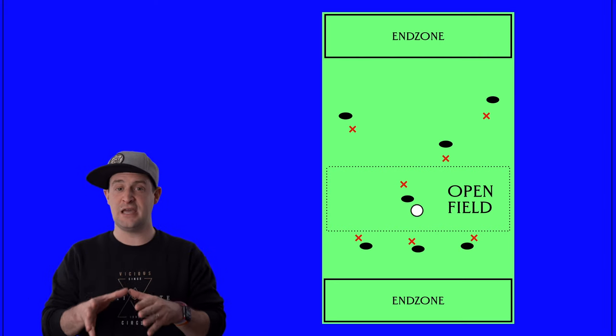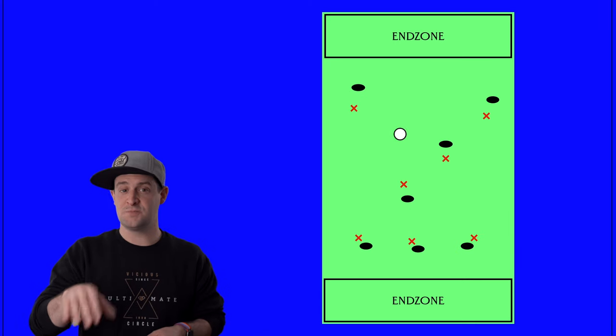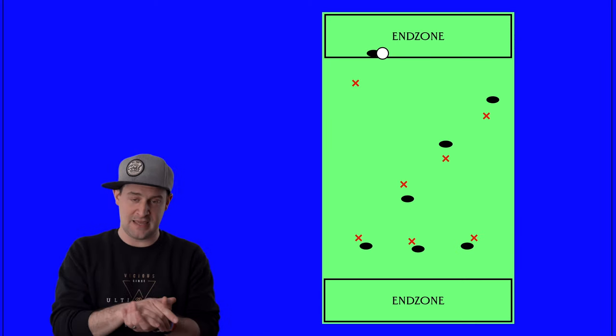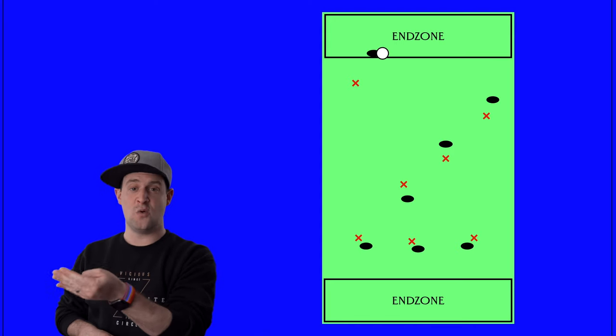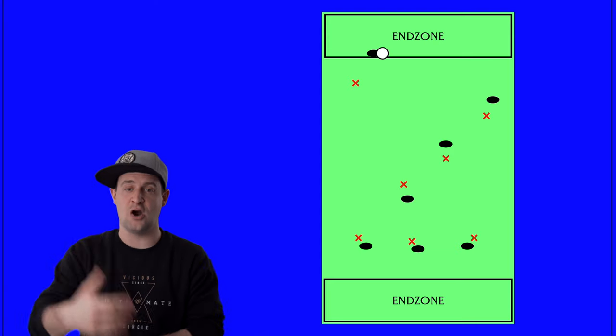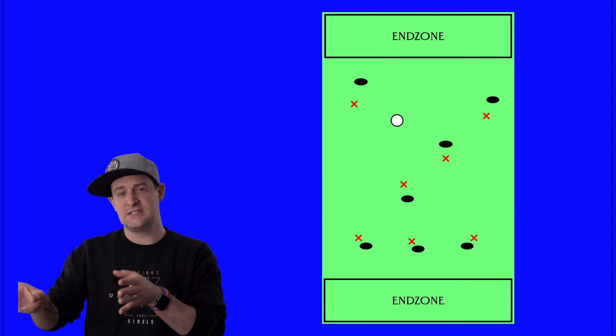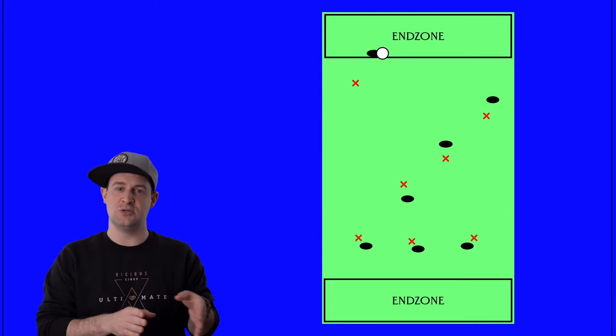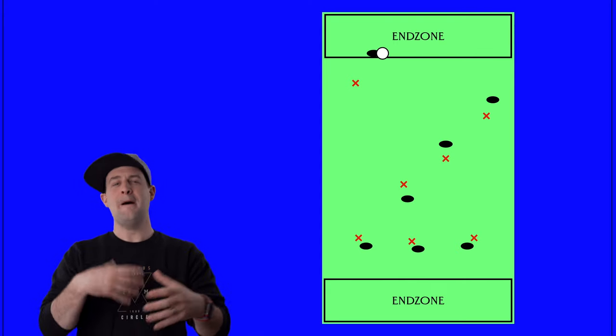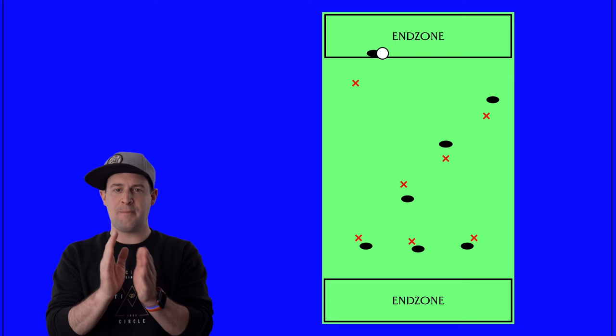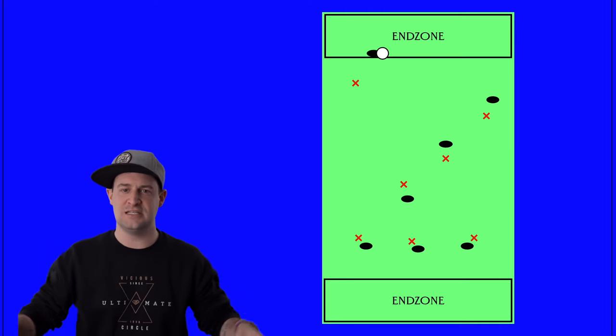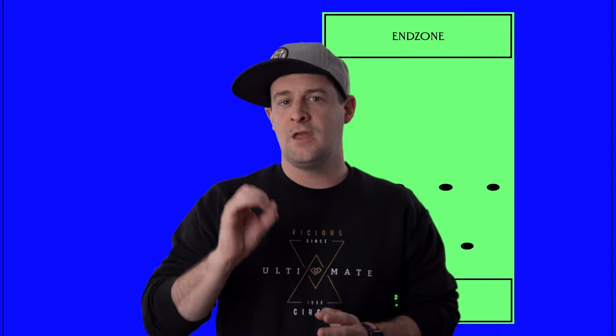The other thing that this does is it actually makes you an option for one of those poppers to throw it to you right away if they get it. If a popper cuts in, they get the disc and they turn and you're already going deep, they know they can put that disc to you. That's an easy point, or at least an easy advance of a lot of yards because you were ready for it and you trusted them to get the disc and you made an opportunity for that continuation throw. So that's why when the disc is in the center of the field, by default, you want your poppers to move in the middle, stay a little shallow and your wings to push a little deep and be ready for that continuation or even that point.